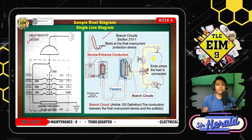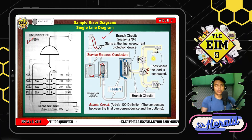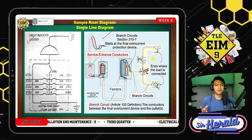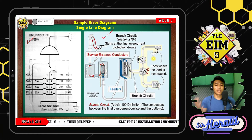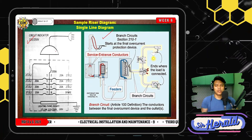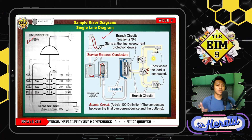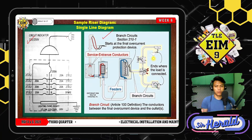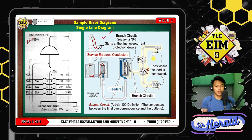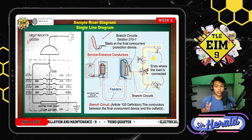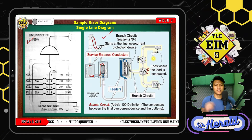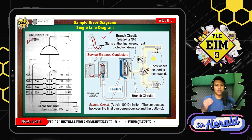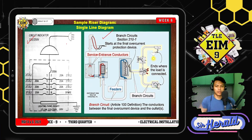Let me give you an idea — the schematic diagram's example is this riser diagram itself. Because as you can see, we used electrical symbols in the riser diagram, and we can also see the pathways or connections of our electrical symbols and our devices. So now let's start to understand what the symbols we discussed look like in the actual.